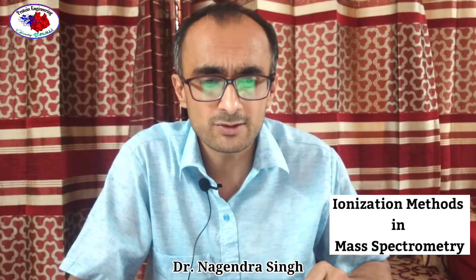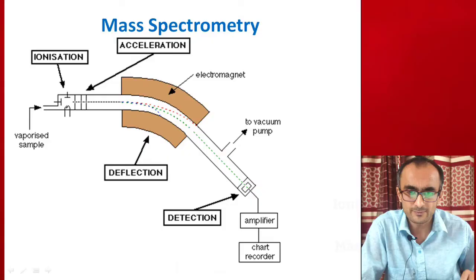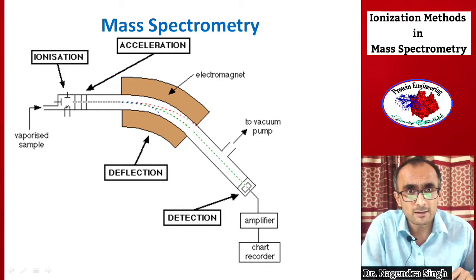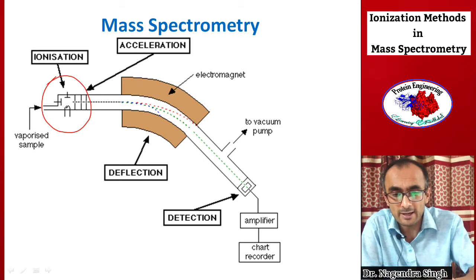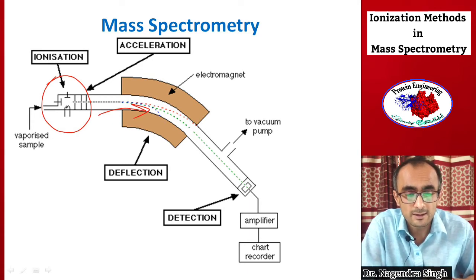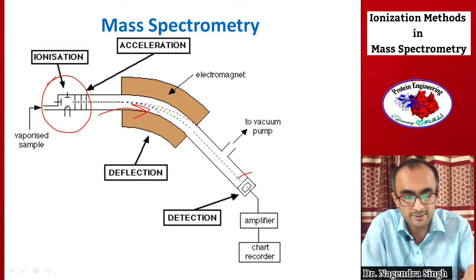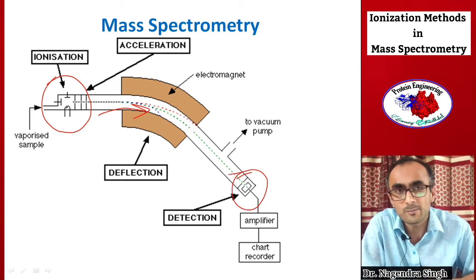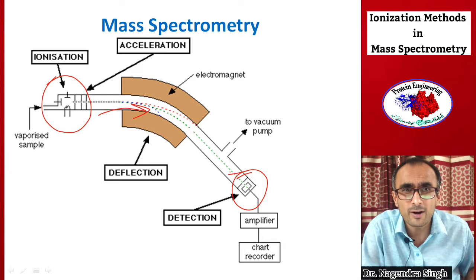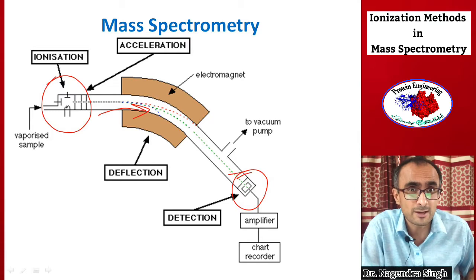In today's lecture we will talk about different ionization methods in mass spectrometry. In an earlier lecture about the basic principles of mass spectrometry, we saw that the first step is ionization of the sample. There are different methods employed to ionize different types of samples, and today we will talk about five commonly used methods of ionizing analytes.